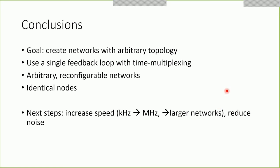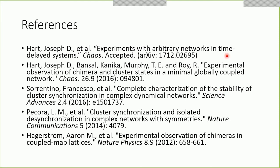Here we'll conclude. Our goal is to create networks with arbitrary coupling topology. To do this, we use a single feedback loop with time multiplexing. This allows us to have arbitrary reconfigurable networks with truly identical nodes. We can change the size and the coupling topology very easily just by changing the programming and configuration of the FPGA. We can have directed or undirected networks created by this technique. In the future, we're working on increasing the speed. Right now, the network runs at about 10 kilohertz. We're hoping to run it on the order of 10 megahertz soon. This will allow us to do larger networks in the same amount of time as we can currently do these 100 node networks. We're also looking to reduce the noise so that we can improve our agreement with simulations and stability calculations. I'll conclude with our reference slide. Most of this work is presented in this top paper here, which has just been accepted by CHAOS and is currently posted on the archive. These other works are all works that have to do with the different networks that we studied and how we calculate the stability of them and the chemistry properties that give rise to clusters and chimeras. Thank you.